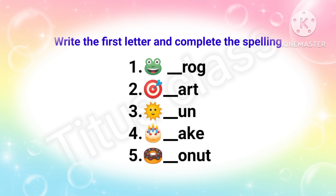Let's do it. First one: frog. Frog starts with F — F-R-O-G, frog. Second one: it is dart. Dart starts with D — D-A-R-T, dart. Third one: it is sun. Sun starts with S.